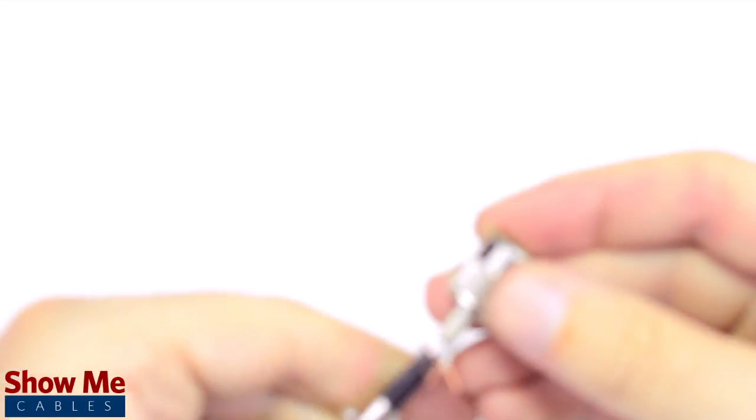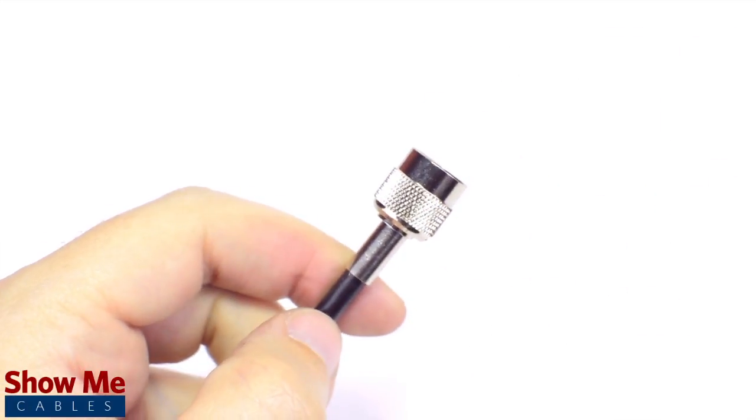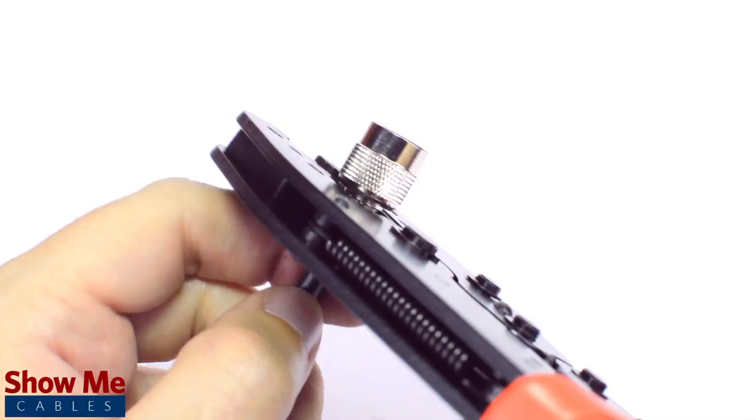Then, slide the ferrule up to the base of the connector, folding the shield with it. Crimp the ferrule under the outer jacket to complete termination.